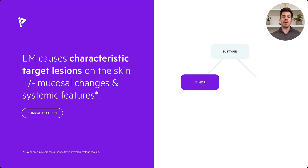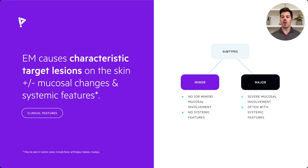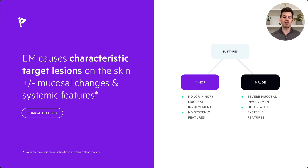There are two subtypes of Erythema Multiforme. There's minor, which is no or minor mucosal involvement and no systemic features — in this situation patients just have the classic cutaneous target lesions. In Erythema Multiforme major, there's severe mucosal involvement of the oral or ocular mucosa, and there are often systemic features such as fever, arthralgia, and myalgia.